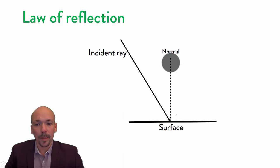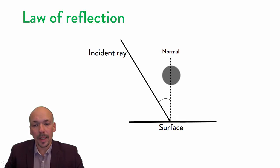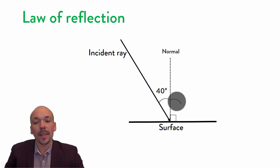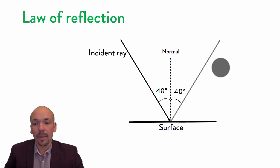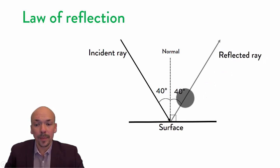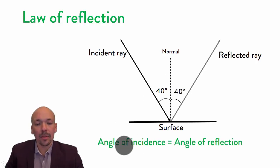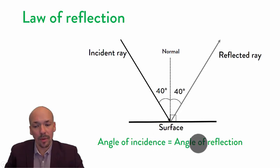You always have to first draw the normal. Then we measure the angle between the incident ray and the normal. In this case it's 40 degrees. If this angle is 40 degrees, that means the reflected ray also has an angle of 40 degrees — the same angle of 40 degrees will be visible. So we can draw the reflected ray, and it would look like this. The reflected ray has the same angle as the incident ray, and that's the law of reflection: the angle of incidence is equal to the angle of reflection.